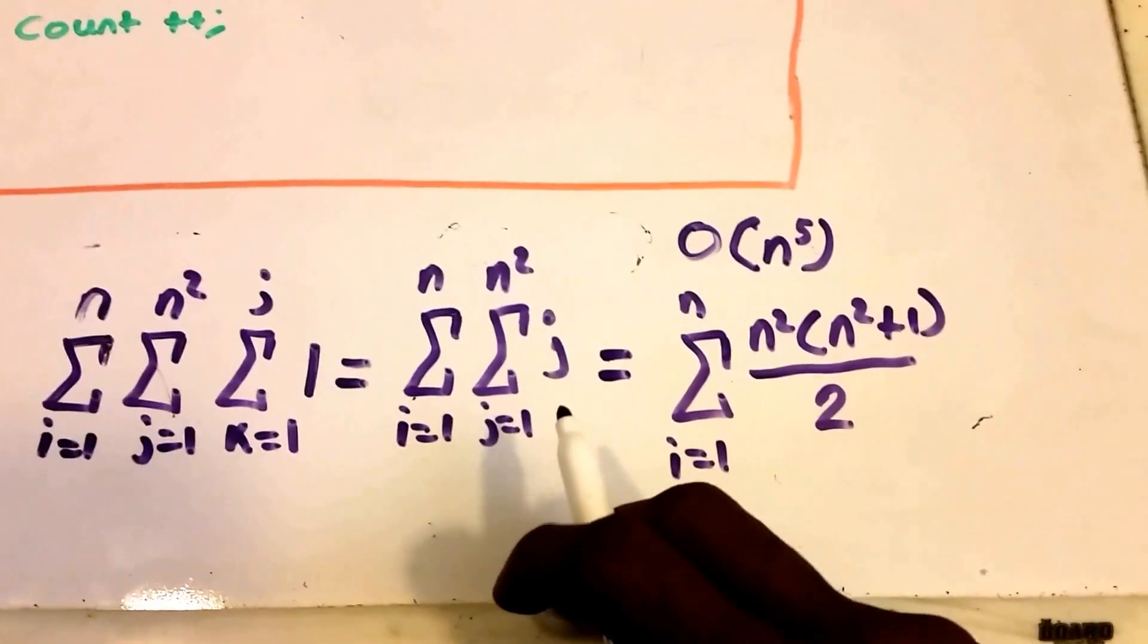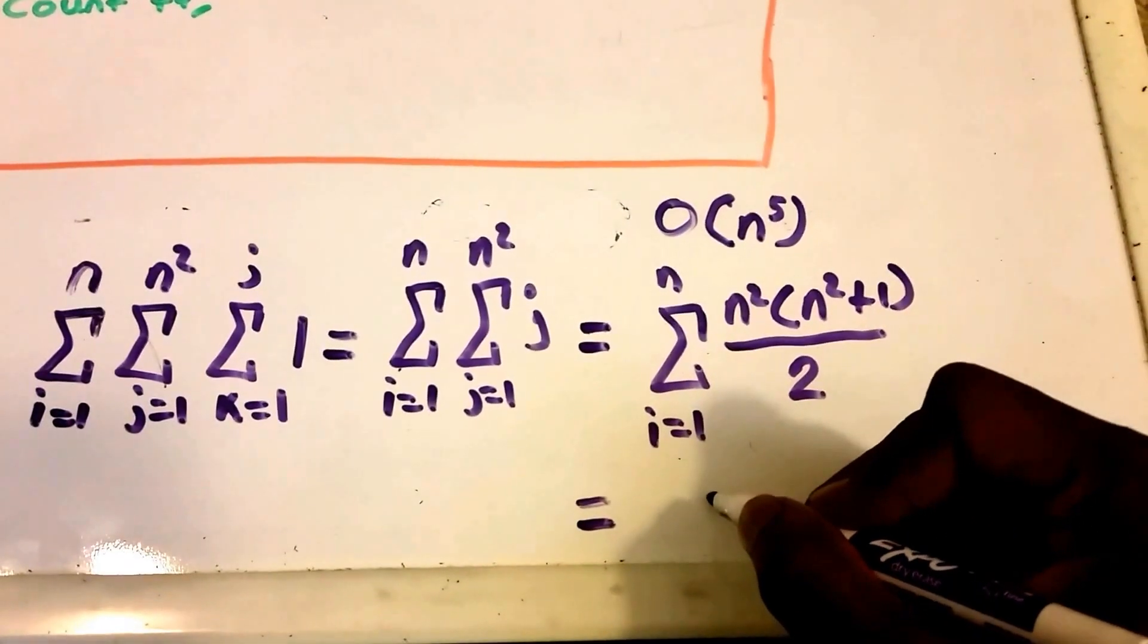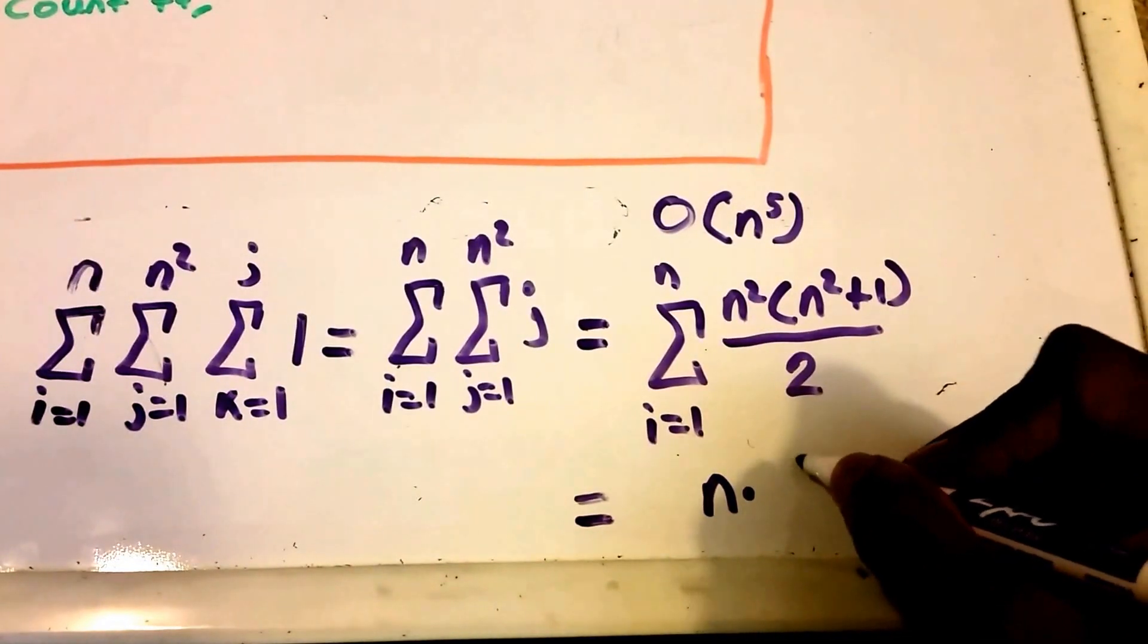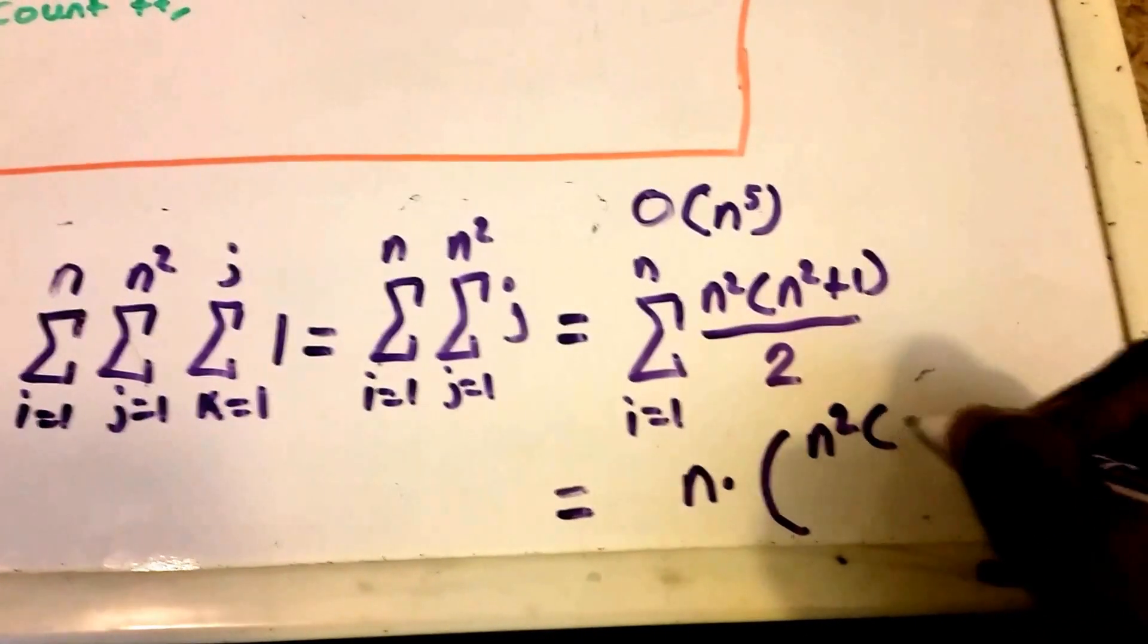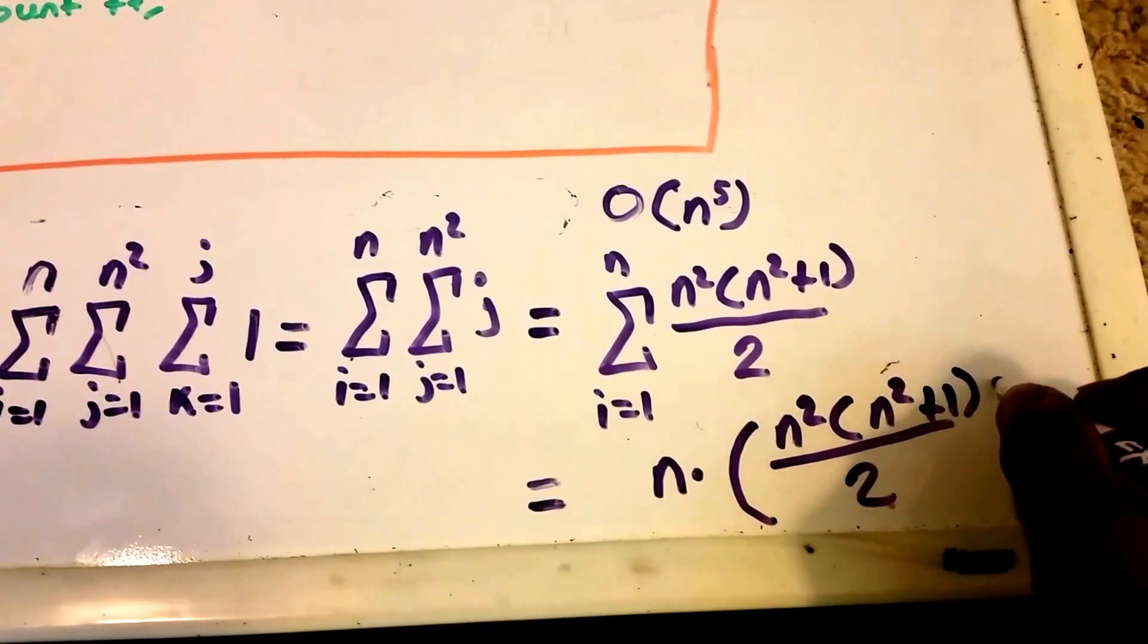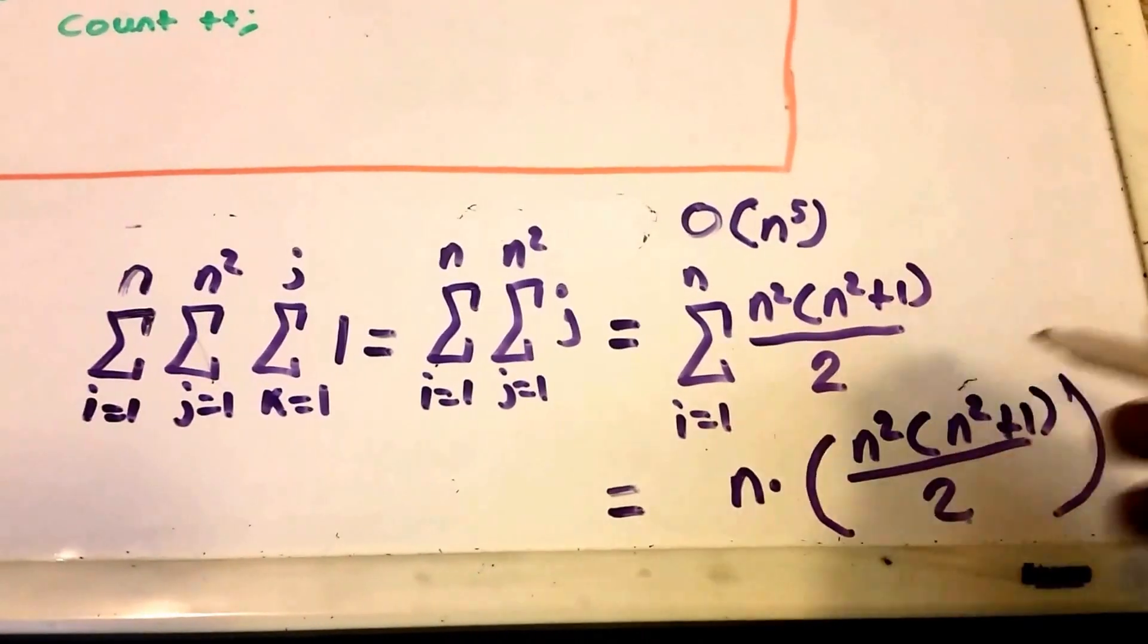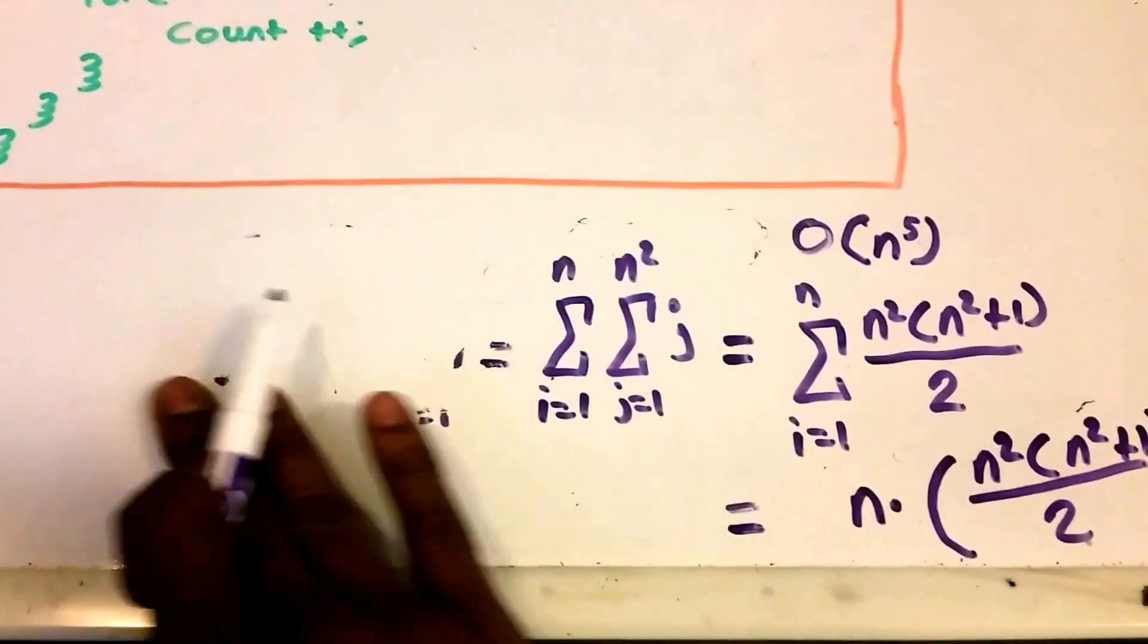All right, so now what does this equal? Look, I'm running out of room here actually, so this is actually equal to n times n squared times n squared plus one all divided by two.